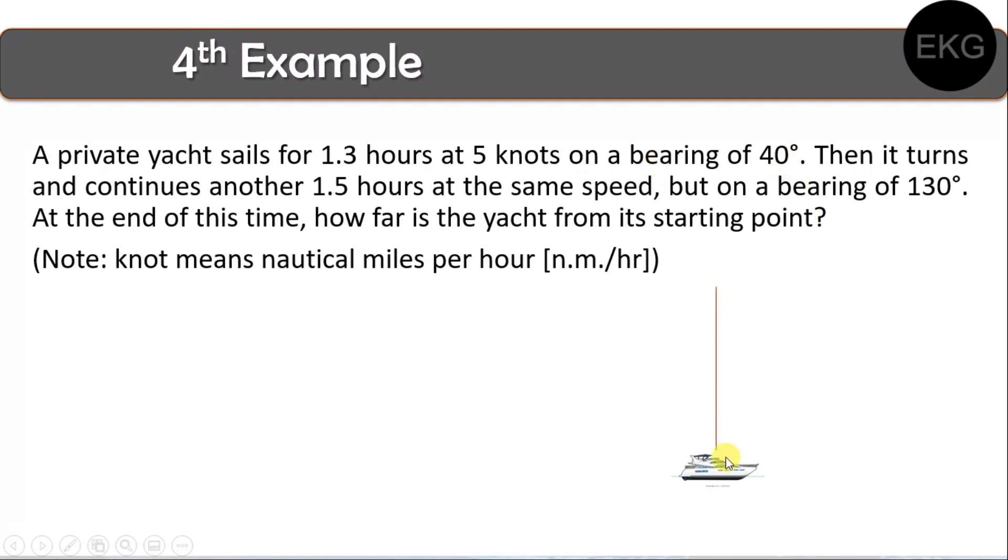Now, how do we solve this problem? So, again, magagamit natin yung definition ng bearing kanina or dun sa previous video. So, we have a yacht. Sabi sa problem, a private yacht sails for 1.3 hours at a speed of 5 knots. On a bearing of 40 degrees. So, to establish this bearing, so, again, gawa tayo ng linya. So, kung nalala nyo yung compass glass, kung cross yan, yung north nasa ibabaw. North, then west, then south, then east. So, yung north nasa ibabaw. So, same lang din itong linya na to. This is the north line para ma-establish natin yung bearing kasi yung bearing is measured from north. So, from north, measure tayo dyan ng 40 degrees. So, yan. So, this is the line, yung direction, or the course na kanyang tatahakin. And this is the bearing na 40 degrees.